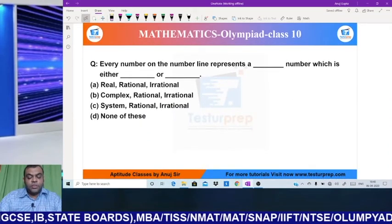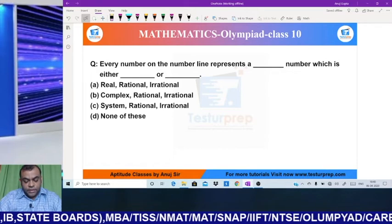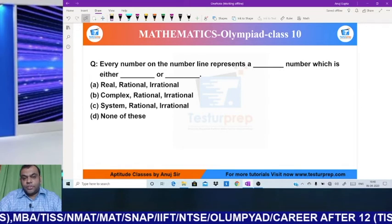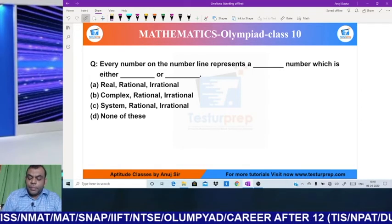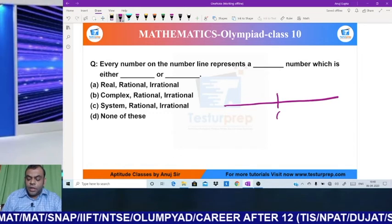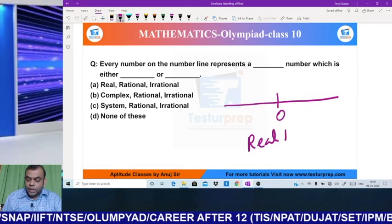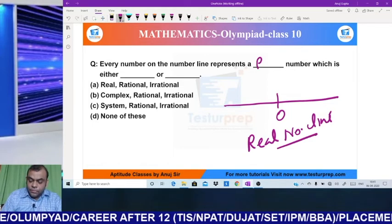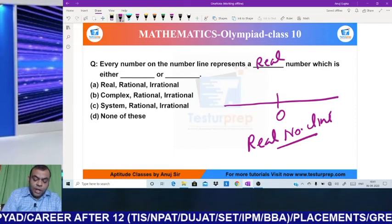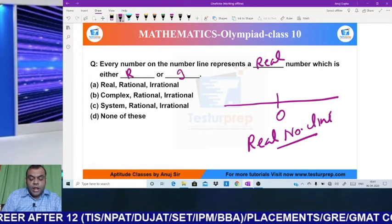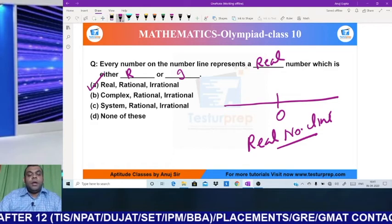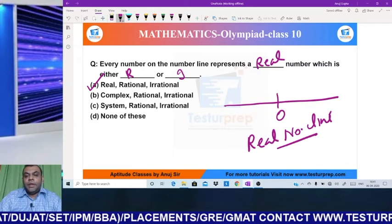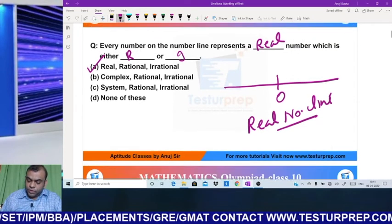My next concept is from the definitions of number system. It says that every number on the number line represents dash number, which is either dash or dash. So if I look at the options, this number line is called the real number line. So whatever numbers come in it, they are all real. And real numbers are either rational or irrational. So the answer is A option: real, rational, or irrational. I hope it's clear to everyone how questions can be made through applications.